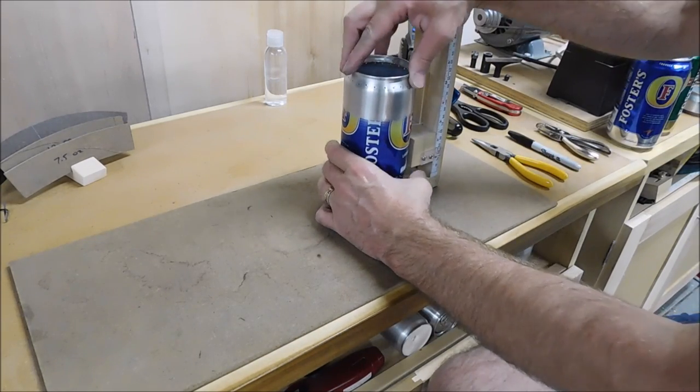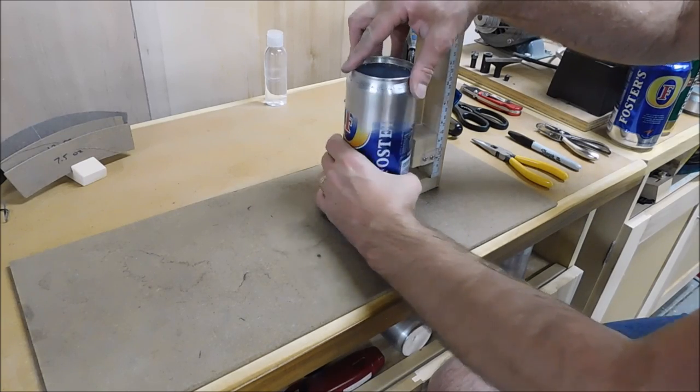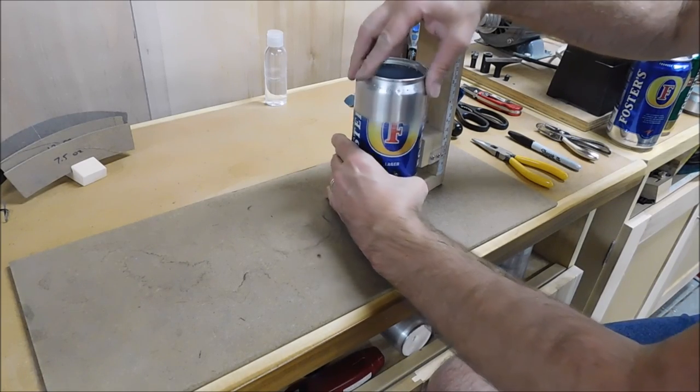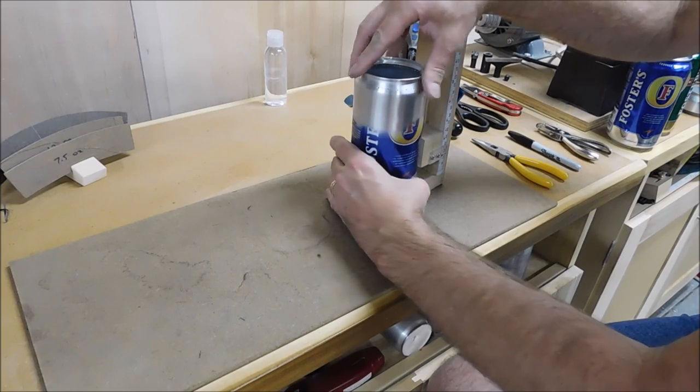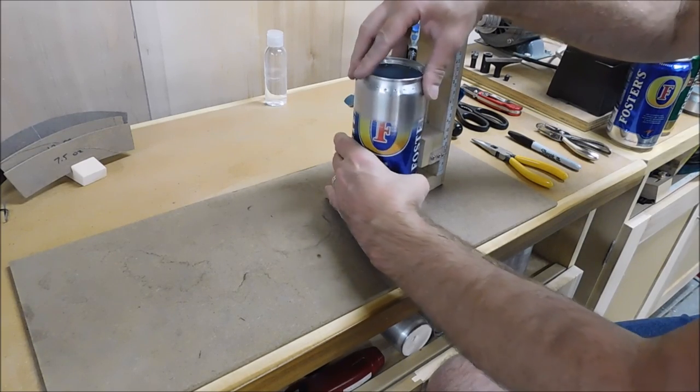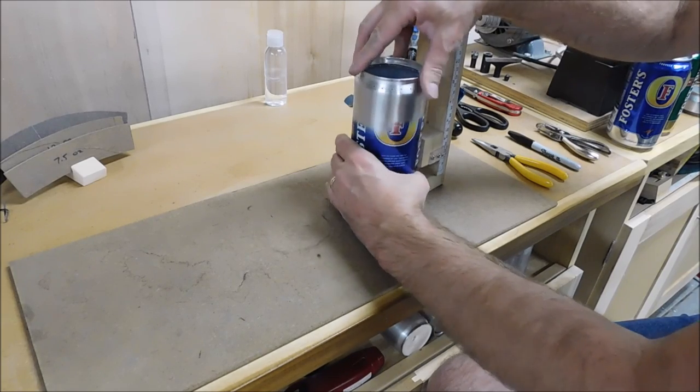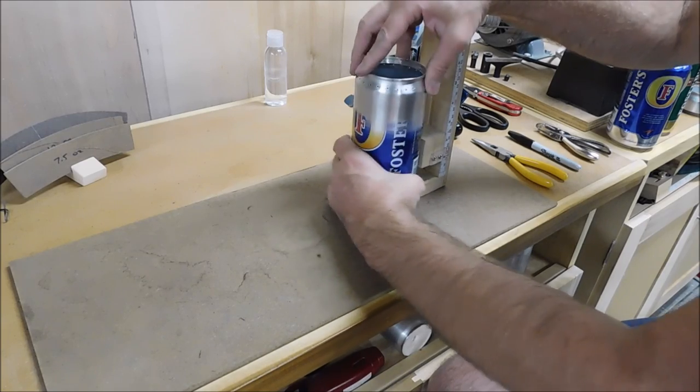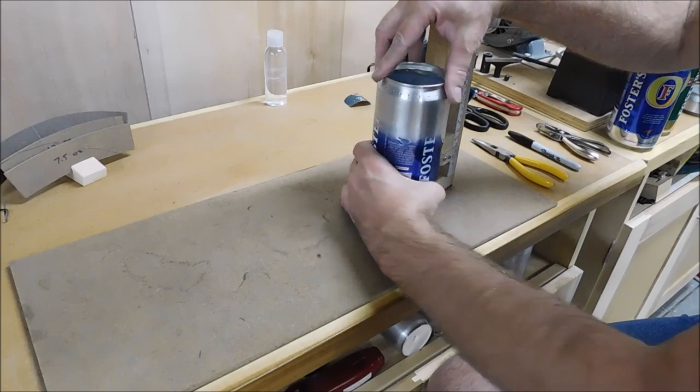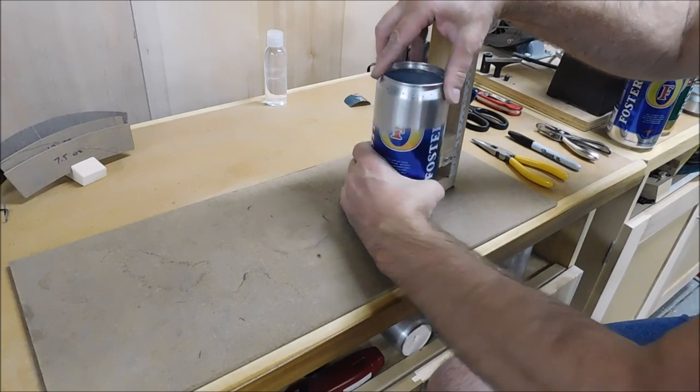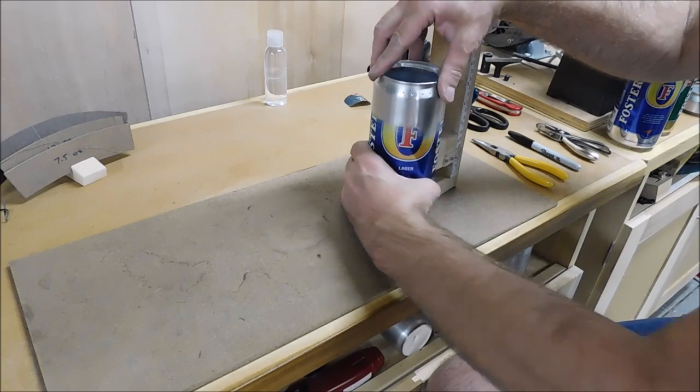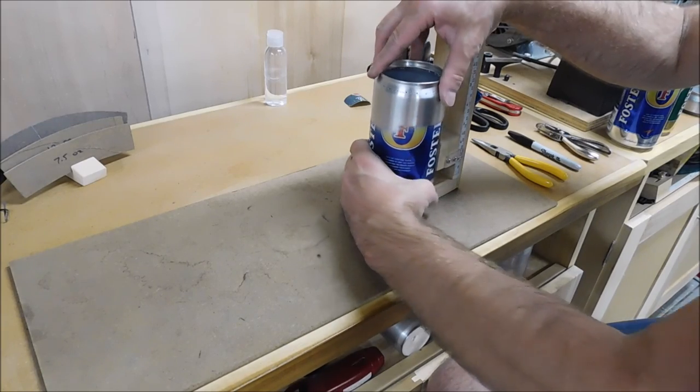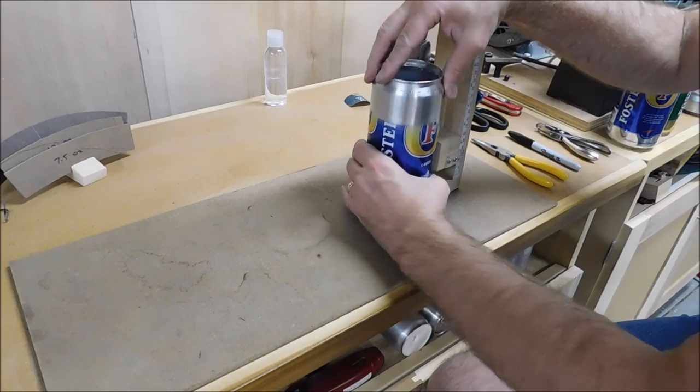I'll rotate the can against that hook blade and score a line. You want to feel the blade drag to know it's cutting and removing metal. Like I said, these Foster cans are pretty thick so it's going to take several revolutions against the blade.